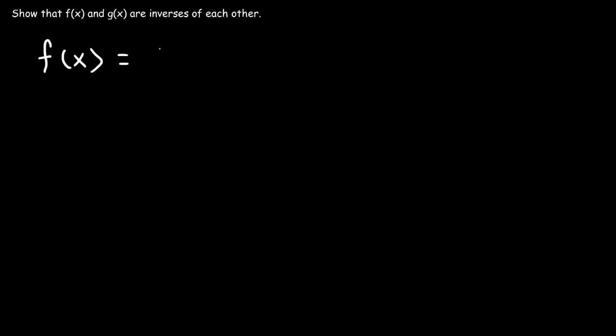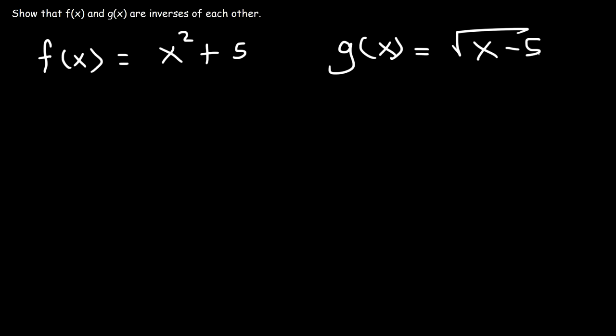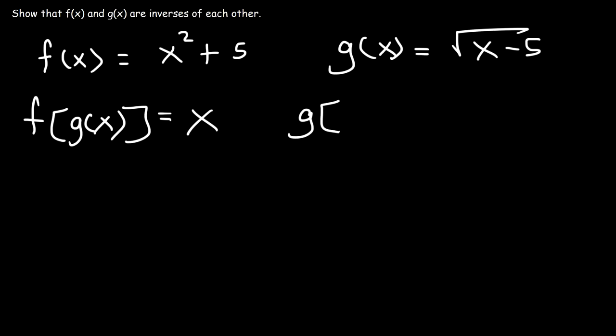In this video, we're going to talk about how to show that two functions f(x) and g(x) are inverses of each other. What we need to do is show that the composition f(g(x)) is equal to x, and also in the reverse order g(f(x)) is also equal to x. If that's true, then the two functions are inverses of each other.